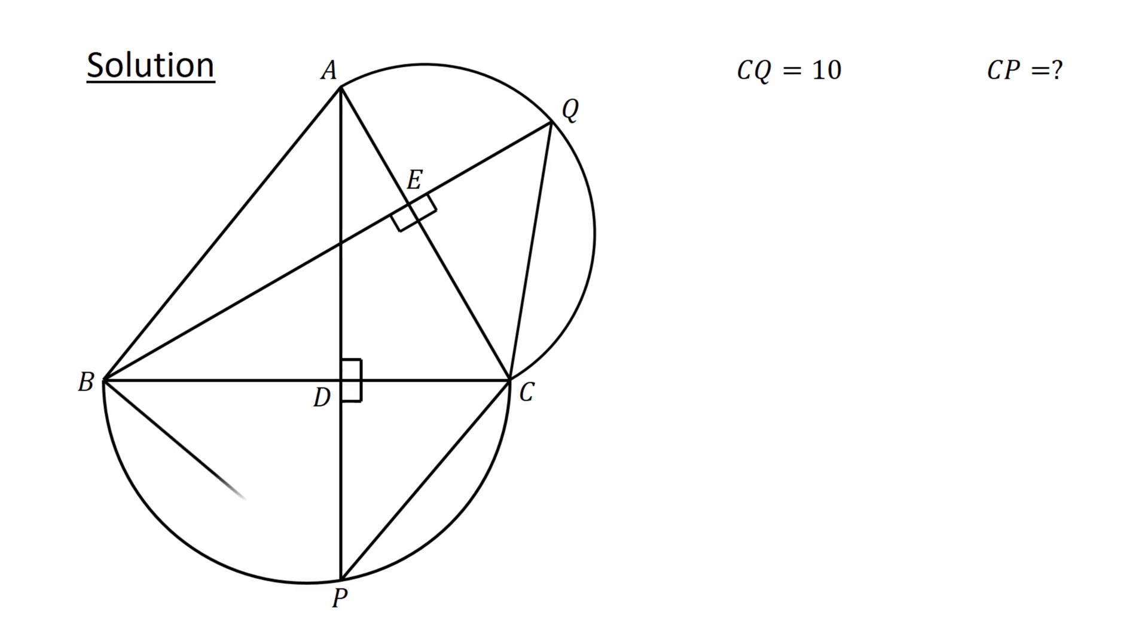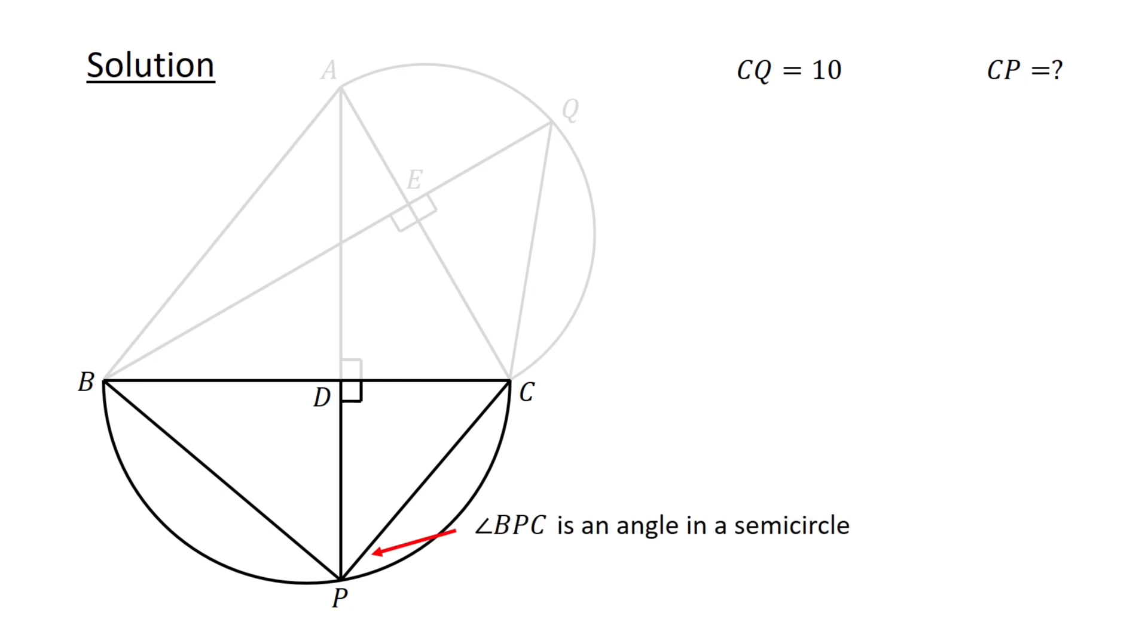First, connect B to P and then consider triangle BPC and the semicircle. Observe that angle BPC is an angle in the semicircle. Recall that an angle in the semicircle is a right angle. Thus, angle BPC equals 90 degrees. Next, let angle PCB be theta.